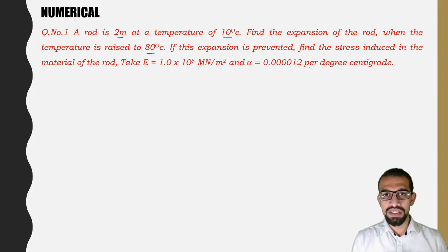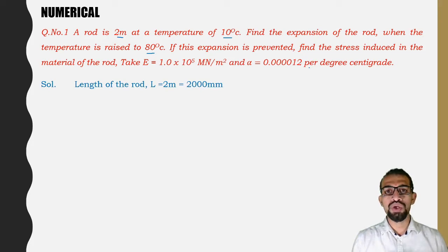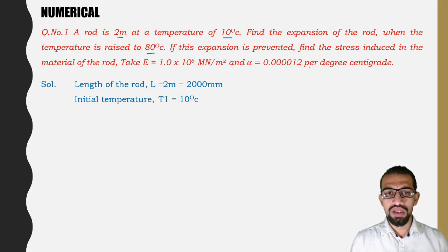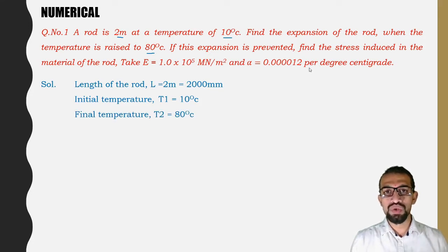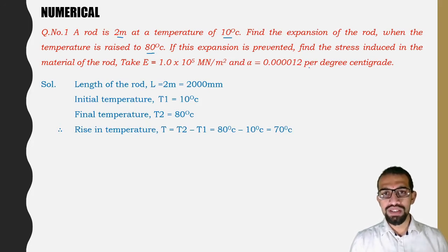Solution: Length of the rod L = 2 meters = 2000 mm. Initial temperature T1 = 10°C. Final temperature T2 = 80°C. Rise in temperature T = T2 − T1.